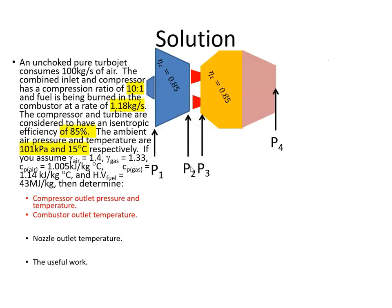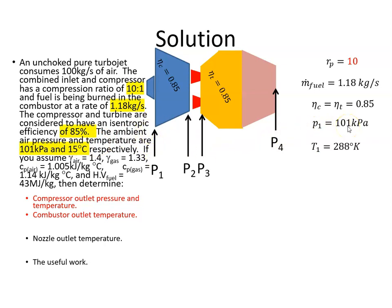Let's begin by getting the compressor outlet pressure. The compression ratio is 10 to 1. The ambient pressure P1 is 101 kPa and the ambient temperature is 15 degrees Celsius, which is 288 Kelvin. So P2 is going to be 10 times the inlet pressure — P2 = 10 × P1 = 1010 kPa.